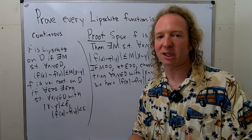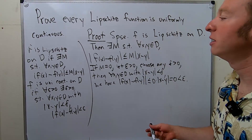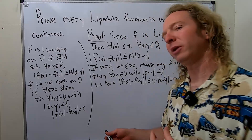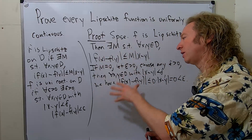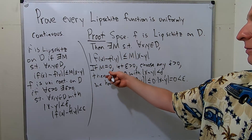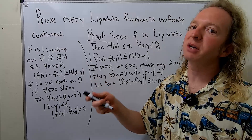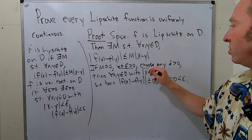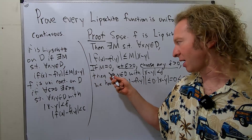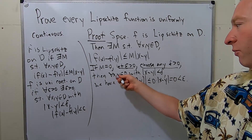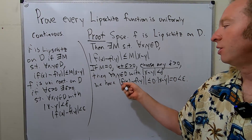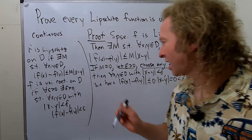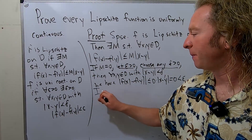If M is equal to zero it's clear, but it's important to write it out. If you're taking a class and turning this in and you say 'clear,' the person grading might wonder if you really know how to show it. A lot of people don't go through these steps, so it's good to make sure you know it's clear.